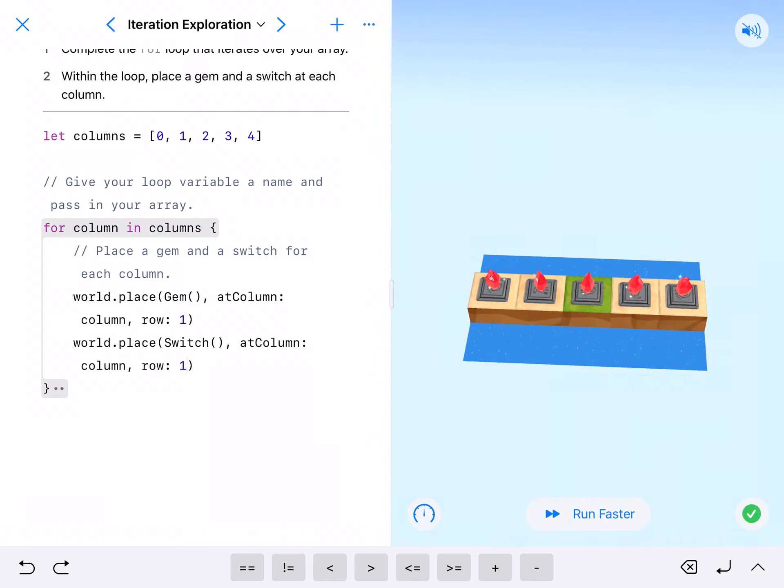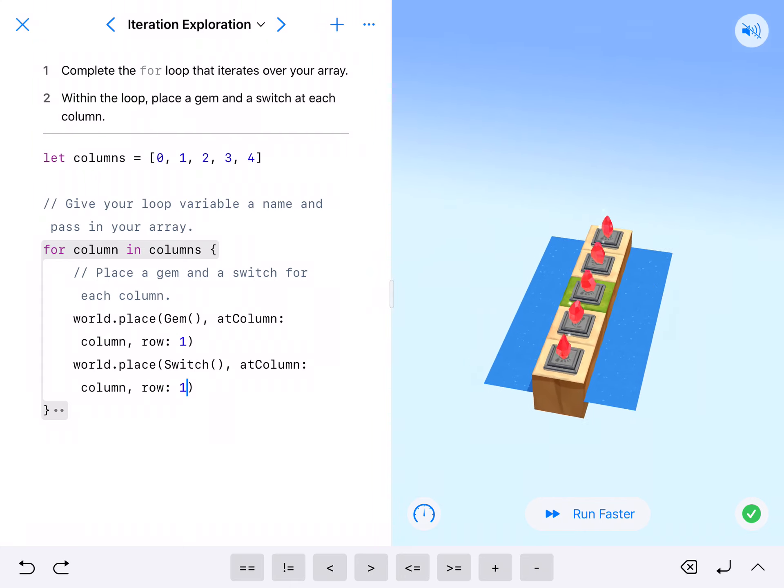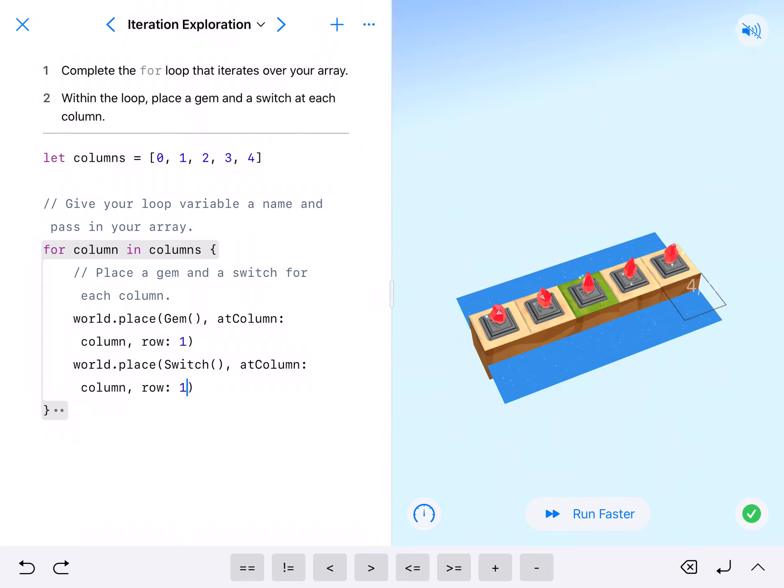Yeah, there we have it. Like I said, there's many things we could do. If we put them at row five, they would end up being off the map. Or if we put everything at row zero, they would be in the water.